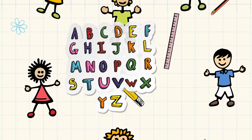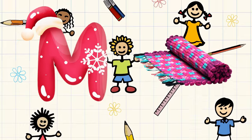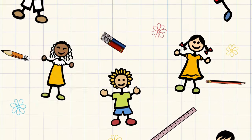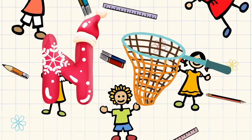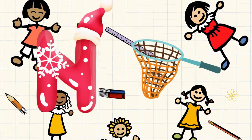M is for mat, m-m-mat. N is for net, n-n-net.